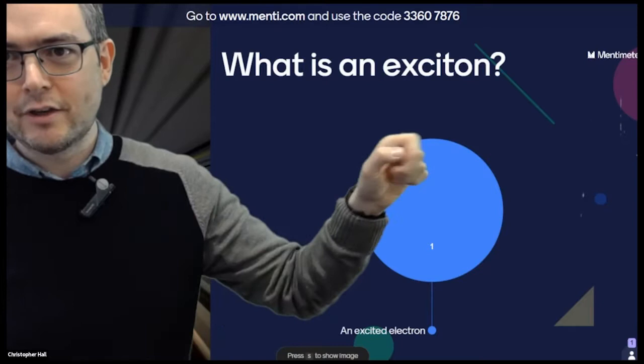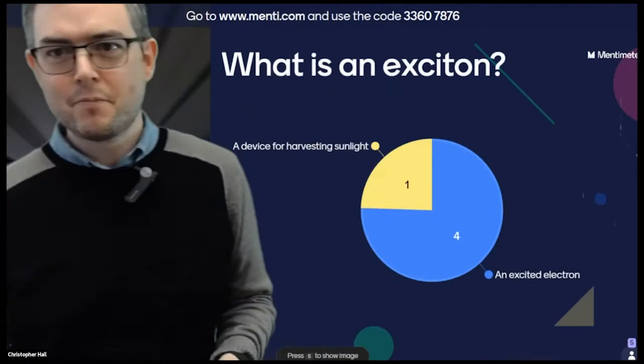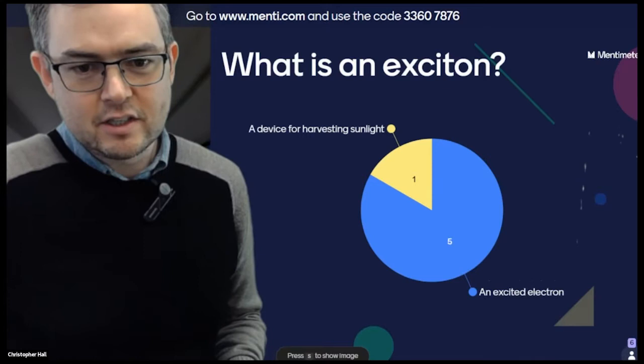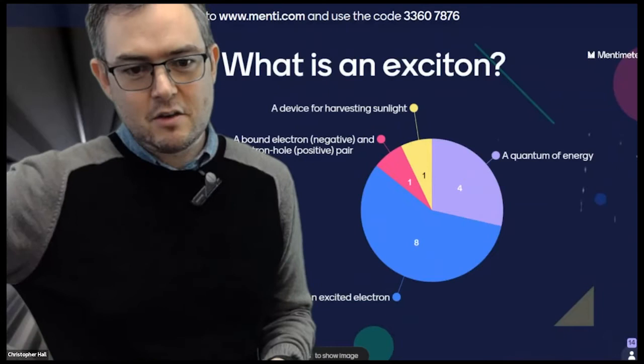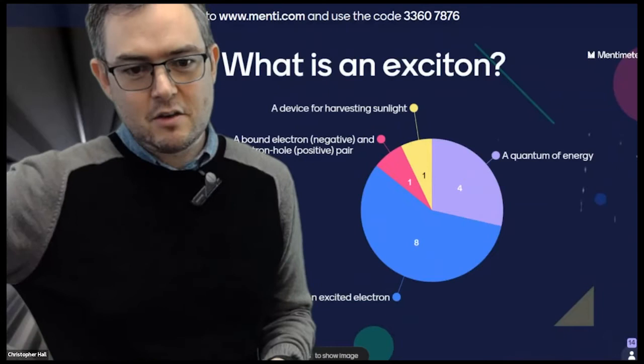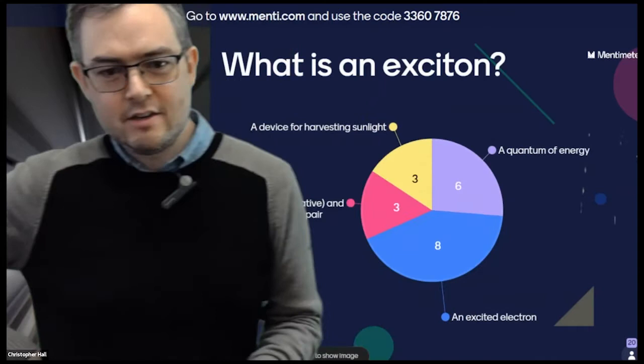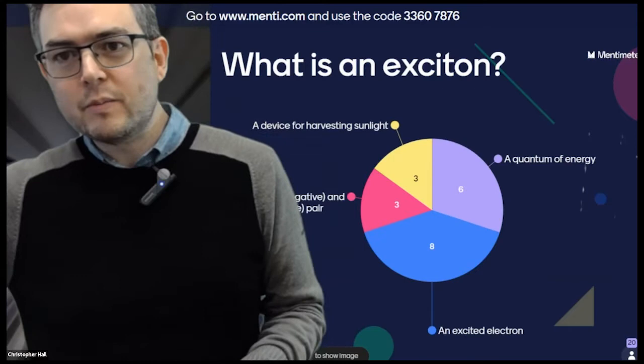So what do you think an exciton is? We've got an excited electron, a device for harvesting sunlight, is it a quantum of energy? The other option is a bound electron and electron hole pair. We've got answers in all quadrants now. Quite a lot of people with excited electrons. Let's move on. So the answer here, an exciton is actually a bound electron and electron hole pair. And I'll explain a little bit about what we mean by that.